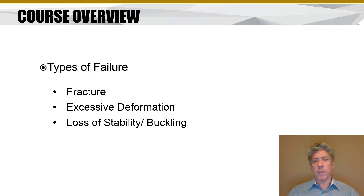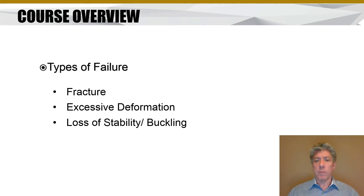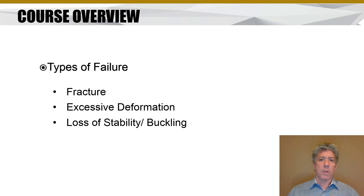Sometimes excessive deformation causes a machine to not work. If a shaft deforms too far, gears riding on that shaft could come out of mesh, or mesh improperly and wear excessively. So there are multiple reasons beyond aesthetics for avoiding excessive deformation. Avoiding buckling is another reason for this course — we have a whole chapter devoted to it. Those are the three primary failure types: fracture, excessive deformation, and buckling.